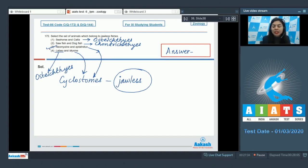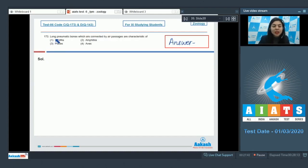Question 173: Long pneumatic bones which are connected by air passages are characteristic of Reptilia, Amphibia, Pisces, or Aves? The bones which are hollow from within are called pneumatic bones. This is the characteristic of Aves or birds. Such bones do not have bone marrow.